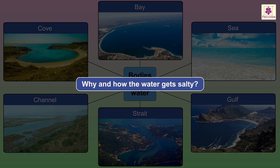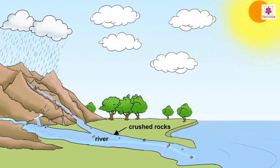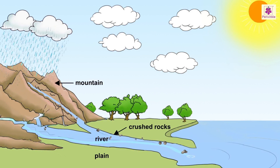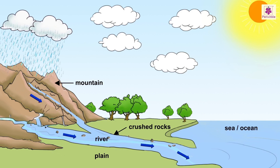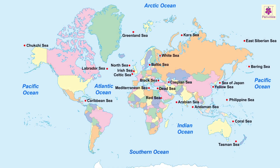Do you know why and how the water gets salty? The rivers carry crushed rocks with them as they flow down the mountains and across the plains, till they finally empty themselves into the seas or oceans. We owe all the salt to the river deposits of crushed rock. This natural phenomenon has been happening for countless numbers of years.